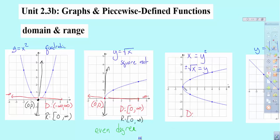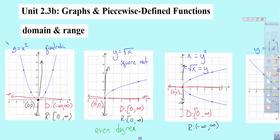For x equals y squared — the domain: I stand at the origin, look to the left, don't see anything. I look to the right and it goes on forever, starting at the origin. So domain is 0 to infinity. The range: as I look down, it goes to negative infinity — even though it's going out quickly, it's coming down. And looking up, it goes to positive infinity. The irony is that this quadratic and this sideways graph are inverses of each other — so you notice when you're an inverse, your x and y switch. The domain becomes the range and vice versa.